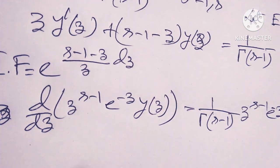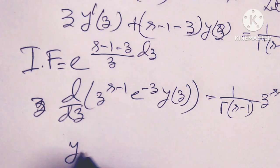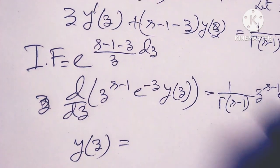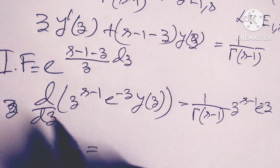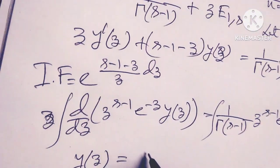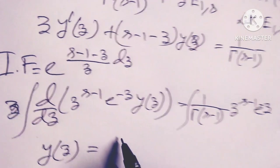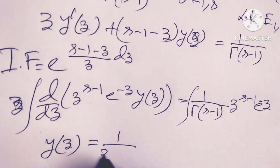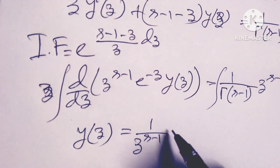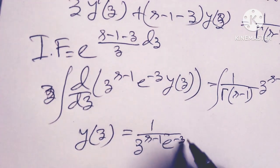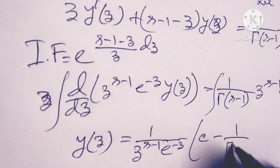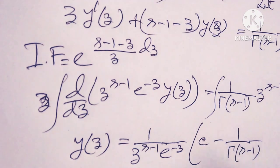After integrating both sides, y(z) equals 1 over [z to the power (s minus 1) times e to the power (minus z)] times [C minus 1 over gamma(s minus 1) times the integral from z to infinity of t to the power (s minus 2) times e to the power (minus t) dt].